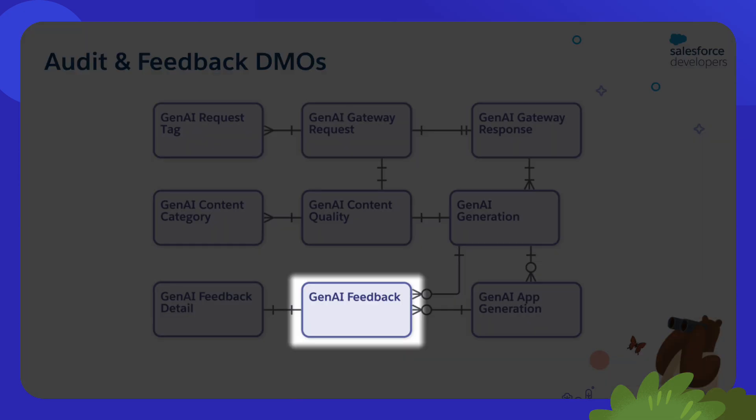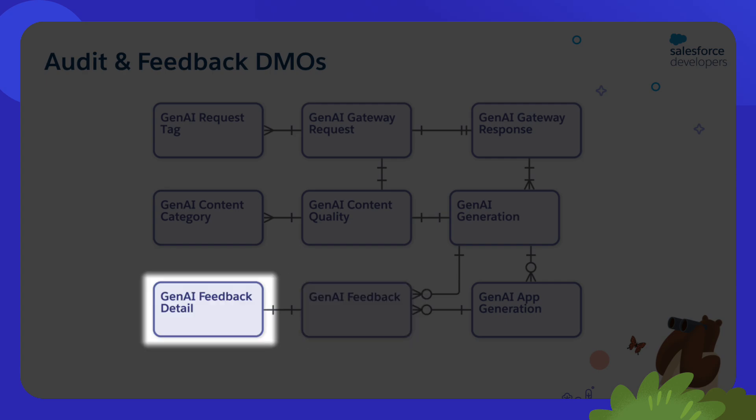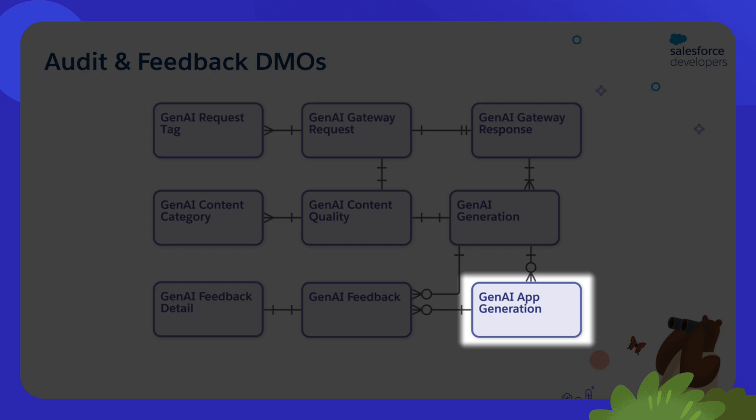Feedback is stored in the following objects: Generative AI Feedback, that stores explicit and implicit feedback from users; Generative AI Feedback Detail, that provides detailed feedback on actions taken by users; and Generative AI App Generation, that stores any generative AI app-specific updates on the generated response.